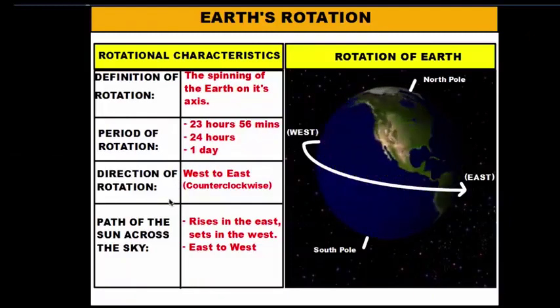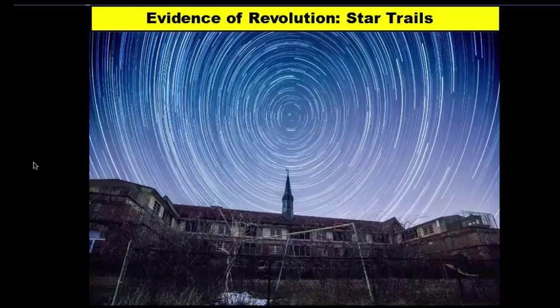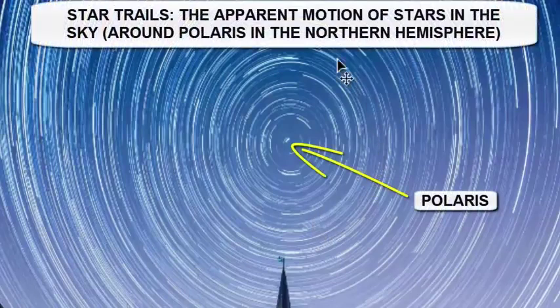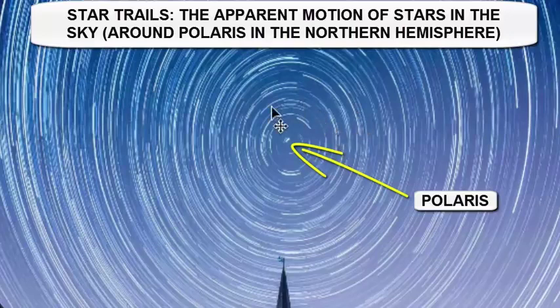Now let's talk about the evidence to help prove rotation of the earth. There are two pieces of evidence. The first piece is star trails — these circular trails that stars leave when a camera is overexposed to them. Throughout the night, the stars appear to rotate in the sky above us. However, it's not the stars that are actually moving — it's the earth moving underneath the sky. As the earth spins underneath the sky, the stars appear to spin.